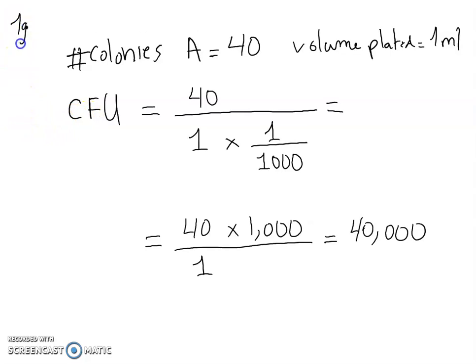So one gram of meat, that's what we started with, and we're looking at how many cells do we have in that one gram of meat. That's the answer: 40,000 cells.